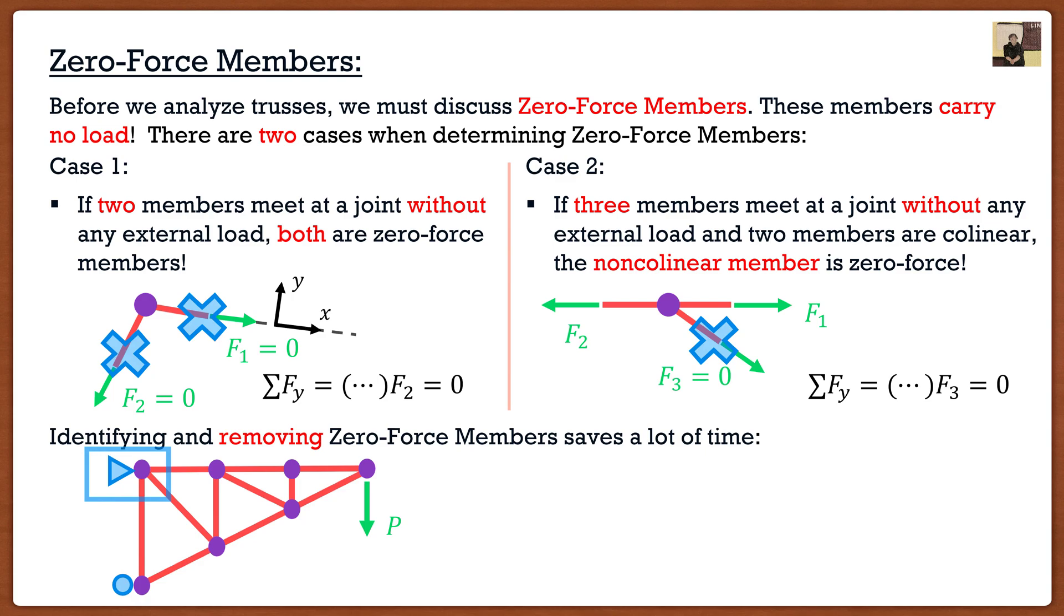If I look at this joint over here, automatically it does not fall into the two cases because it's going to have support reactions due to the pin. Notice that both of these cases say there can't be any support reactions or external loads. So I can conclude that this joint right here I can't do anything, this joint can't do anything, and this joint I also can't do anything, because we have that external load at all three of these joints.